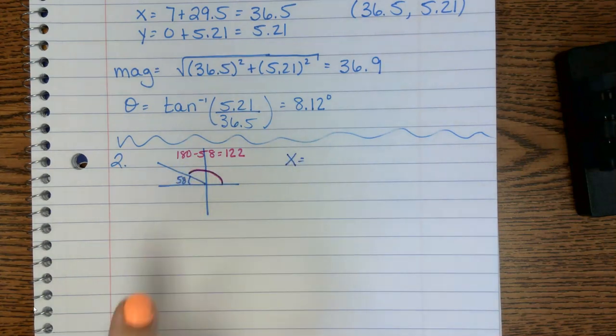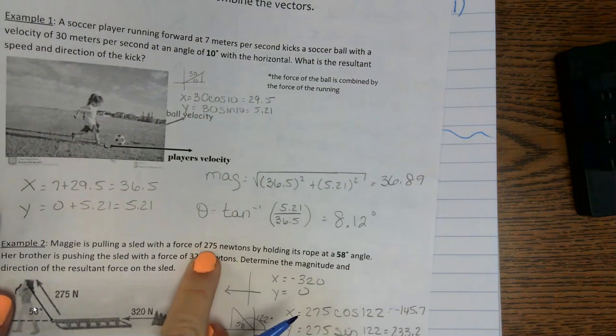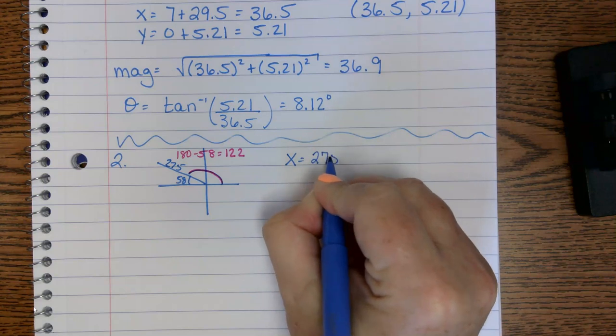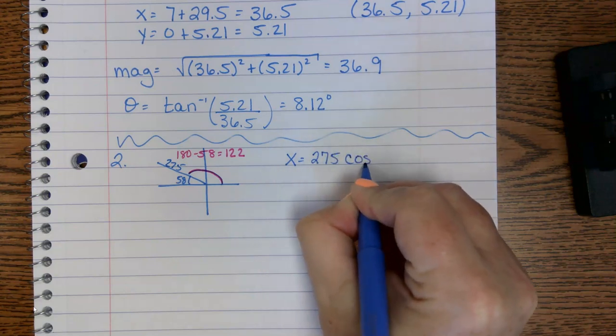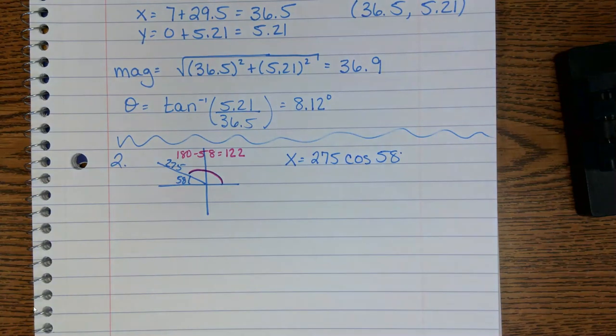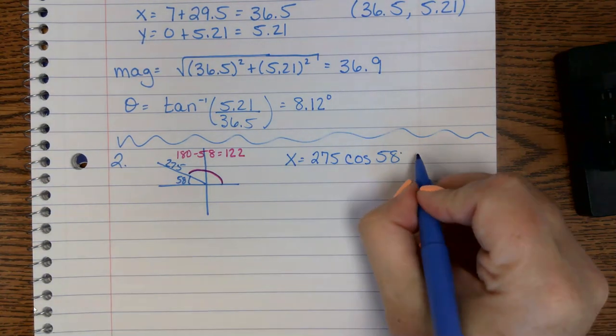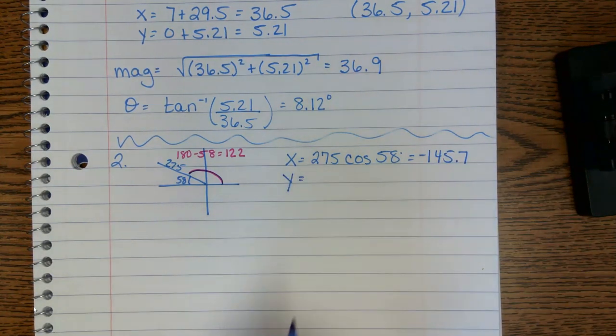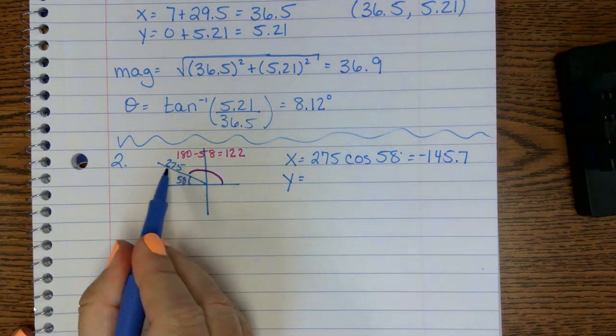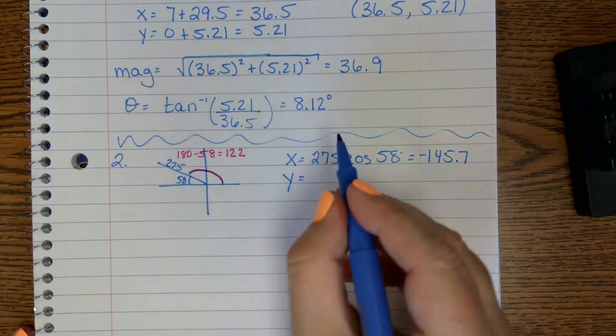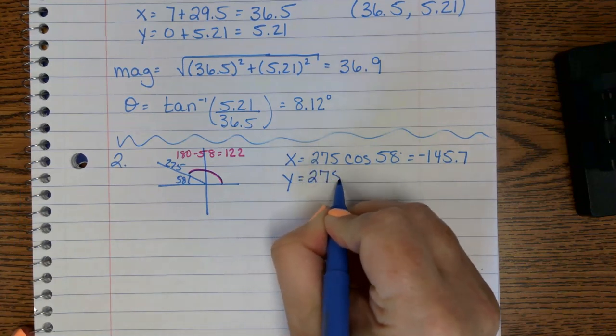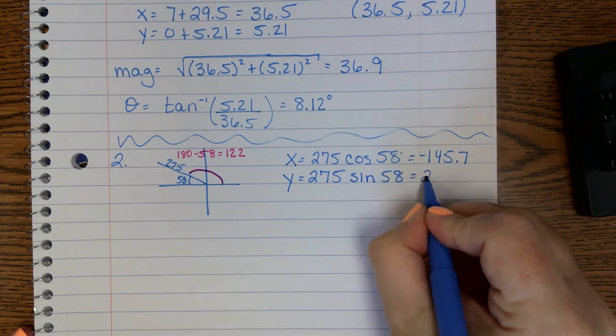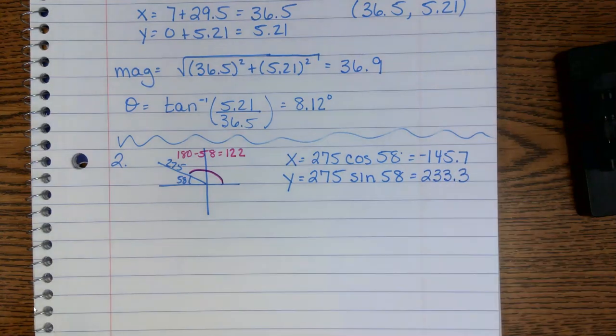So now we have to find the force that Maggie's pulling this sled. So x equals, and how much was the force? 275. So this would be 275 cosine 122. And I got negative 145.7. We also need the y because notice she was pulling up and over. So we're going to repeat the same process but with sine this time. And I got 233.3.